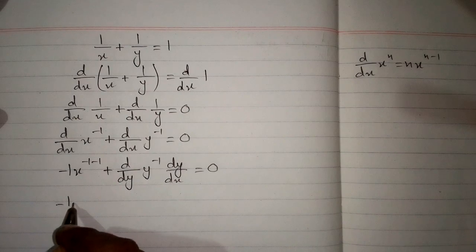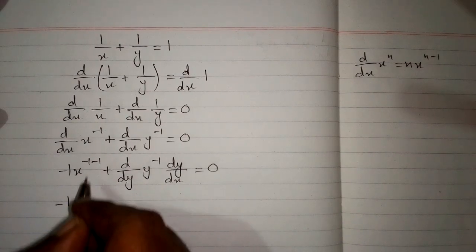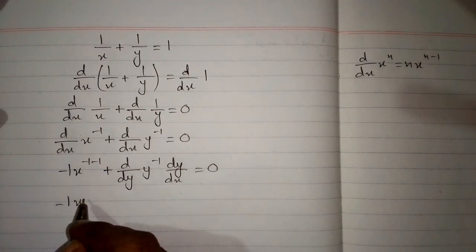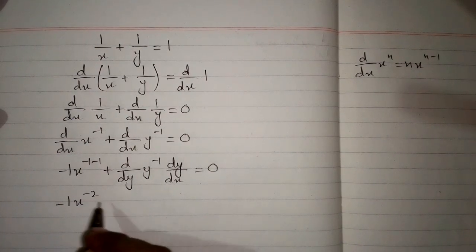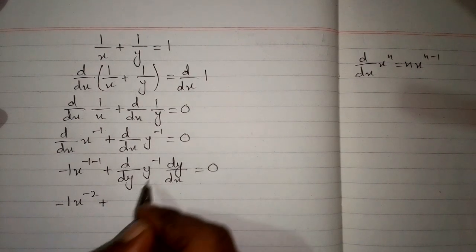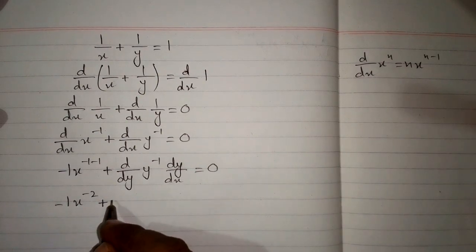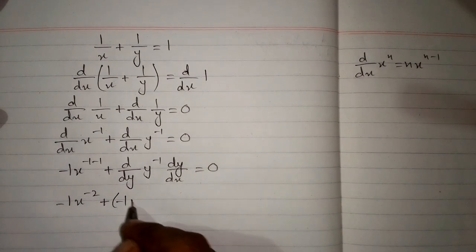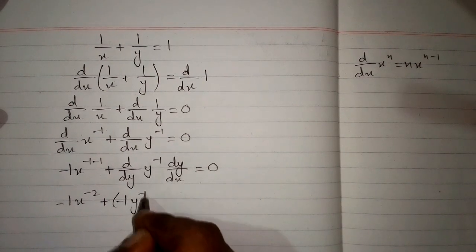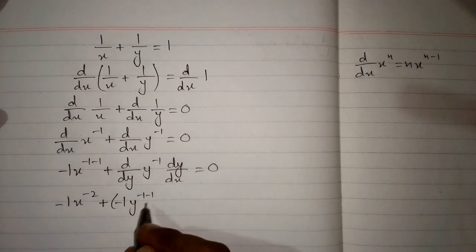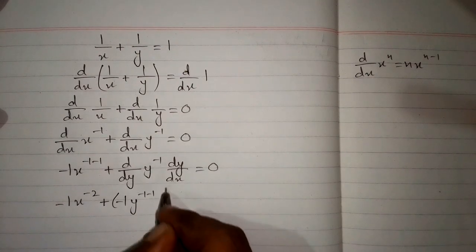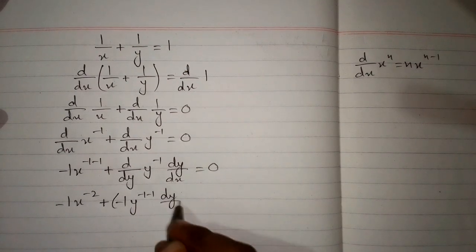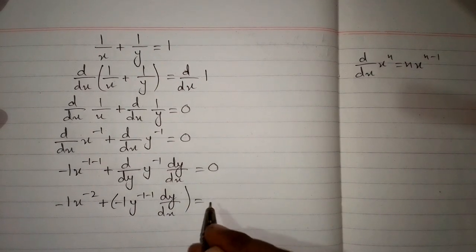So we have minus 1 times x to the power minus 2, and for the y term we apply the formula to get minus 1 times y to the power minus 2, multiplied by dy/dx, is equal to 0.